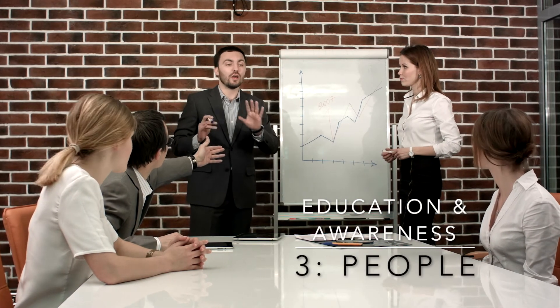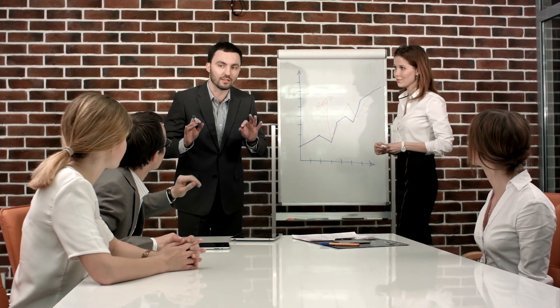The third way to protect your data is through people. Education and awareness can go a long way in a data loss protection program. You need to make sure that employees and contractors truly understand the policies you've implemented, know their roles and responsibilities, and know how to classify data. They need to understand what sensitive data is, because at the end of the day it's often up to the employee to classify data. People really are your first line of defense.